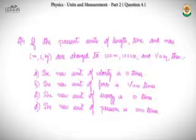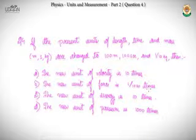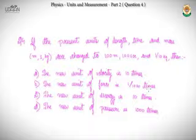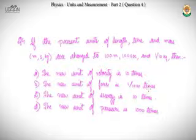Question four: if the present units of length, time, and mass — meters, seconds, and kilograms — are changed to 100 meters, 100 seconds, and 1/10 kg, which statement about the new units is correct? In this hypothetical system, the scale changes: a 100-meter length becomes one unit, and we need to find how velocity, force, pressure, or energy changes.